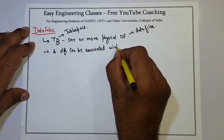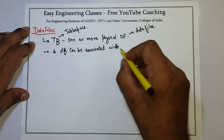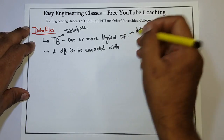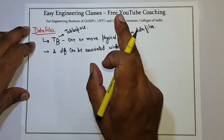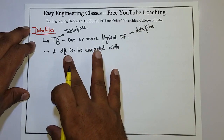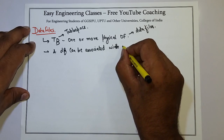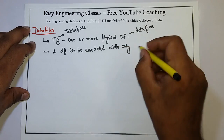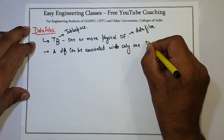Since data files are the actual files that contain the information of table space or database, one data file is associated only with one table space. If it is not true then there will be ambiguity and an inconsistent database.